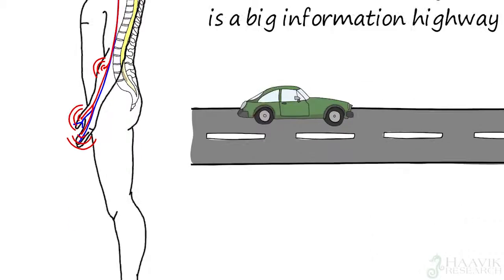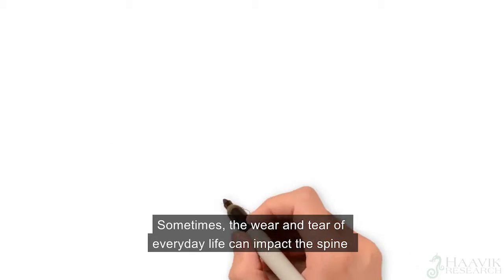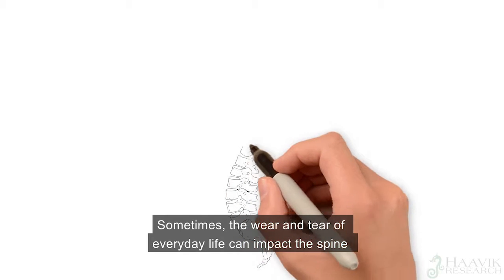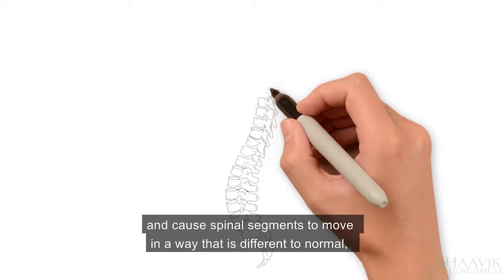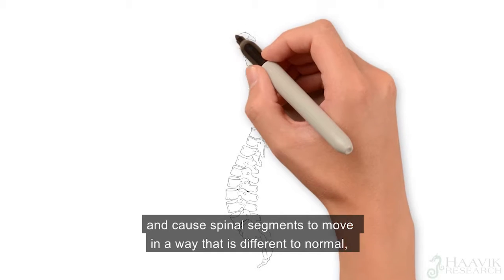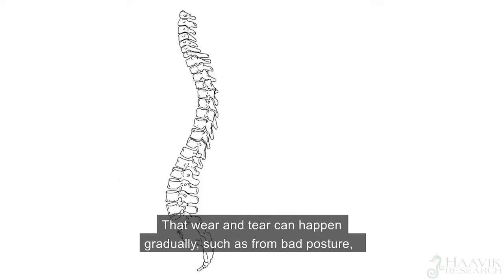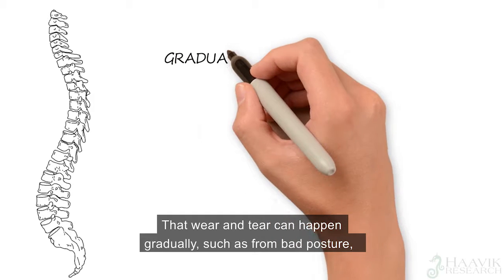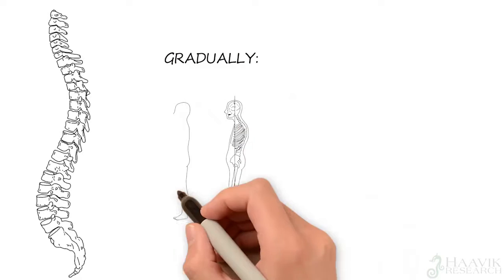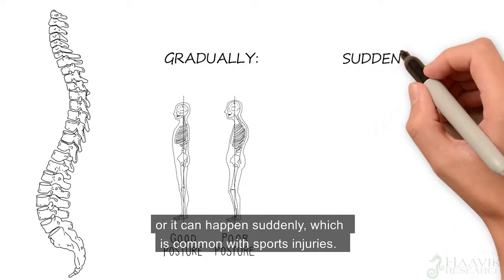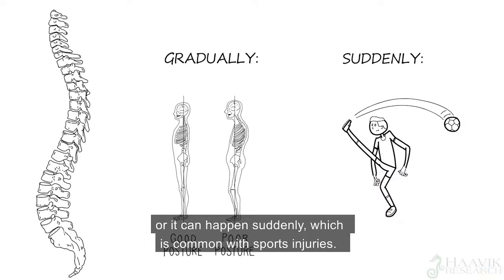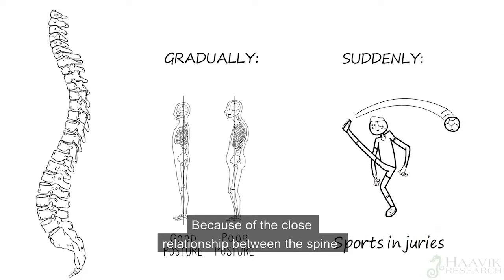Sometimes the wear and tear of everyday life can impact the spine and cause spinal segments to move in a way that is different to normal, in a dysfunctional way. That wear and tear can happen gradually, such as from bad posture, or it can happen suddenly, which is common with sports injuries.